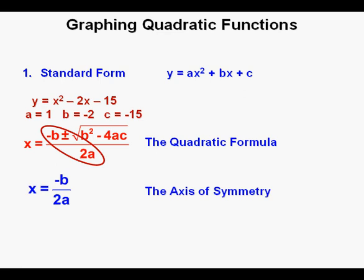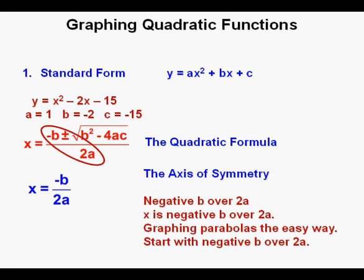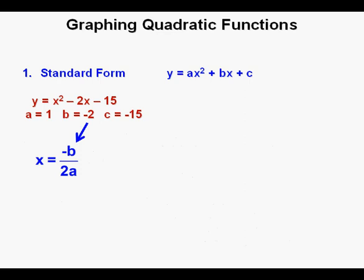This is the equation of the axis of symmetry: x equals negative b over 2a. I have a little song to help remember this formula: negative b over 2a, x is negative b over 2a, graphing parabolas the easy way, start with negative b over 2a. Now we're ready to use it. Negative 2 goes in for b and 1 goes in for a, so that's negative negative 2 over 2 times 1, which equals 1.